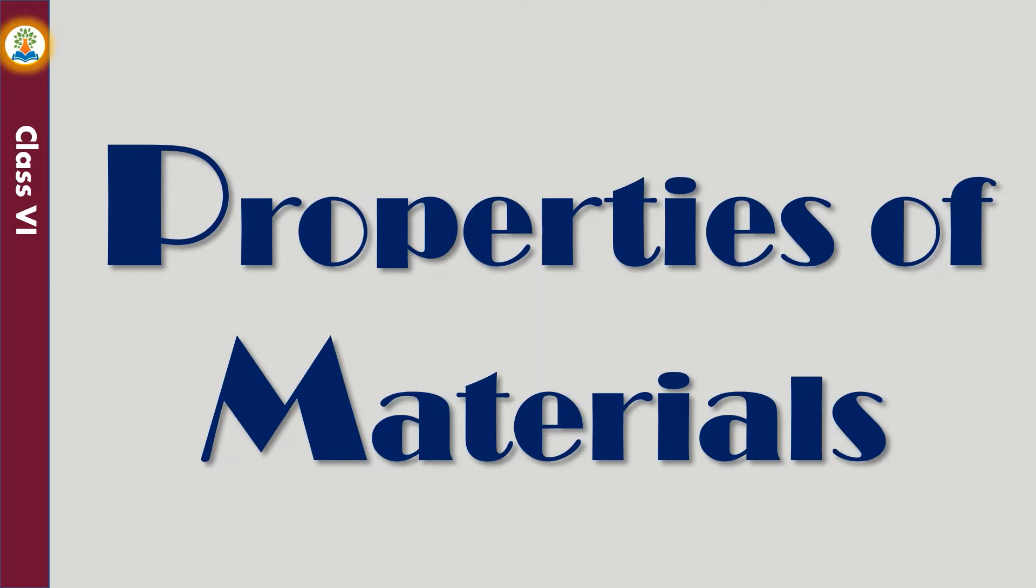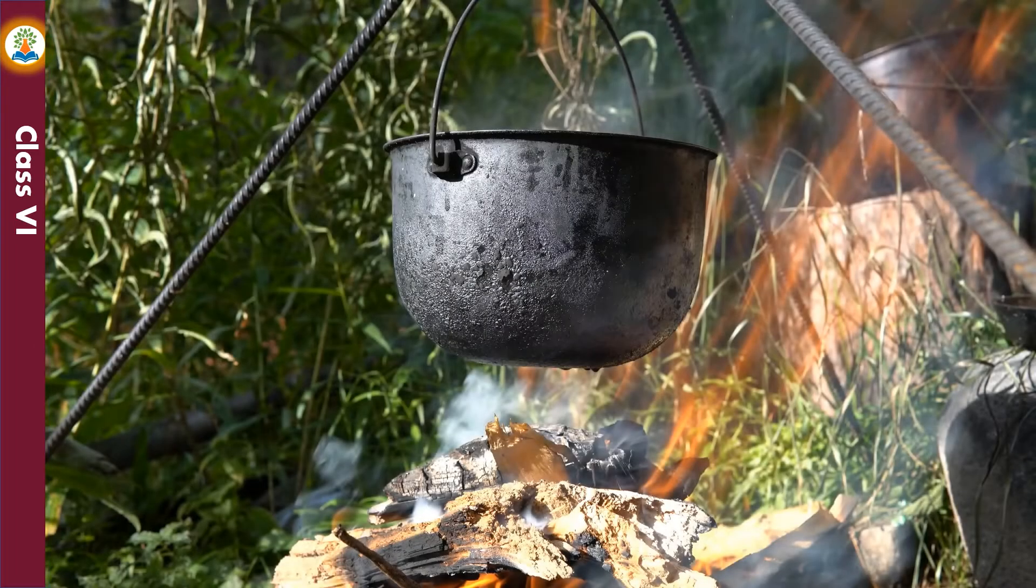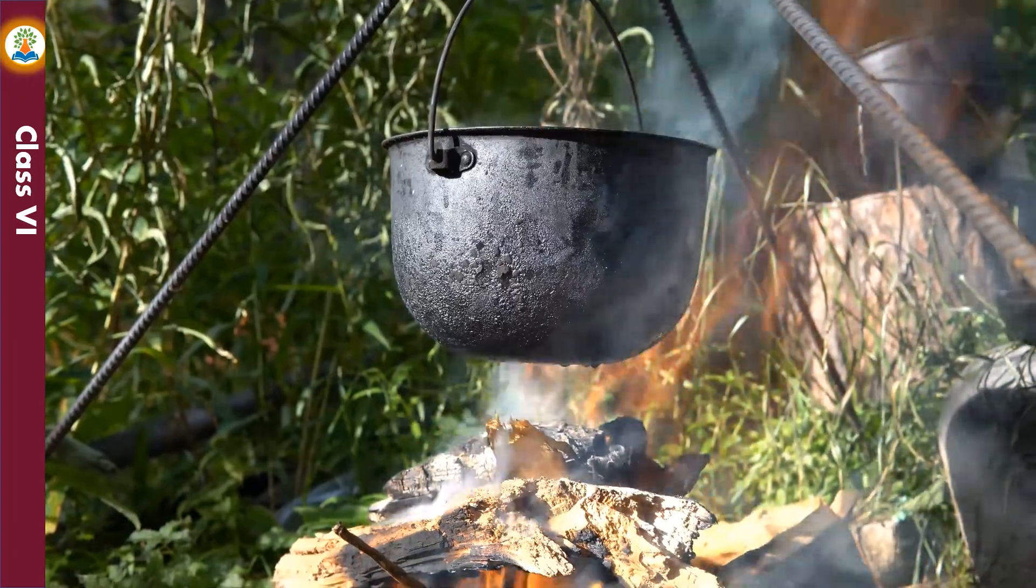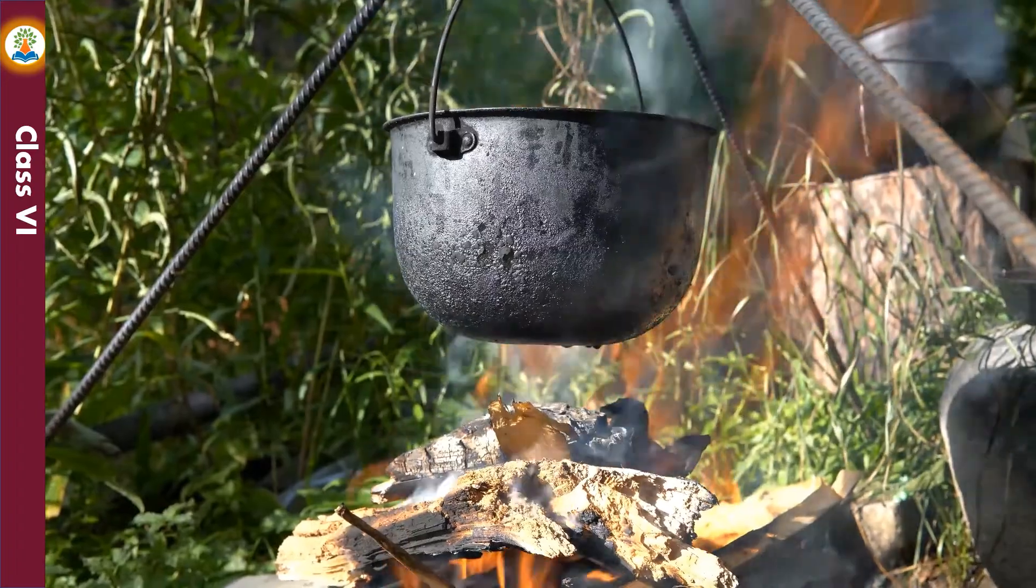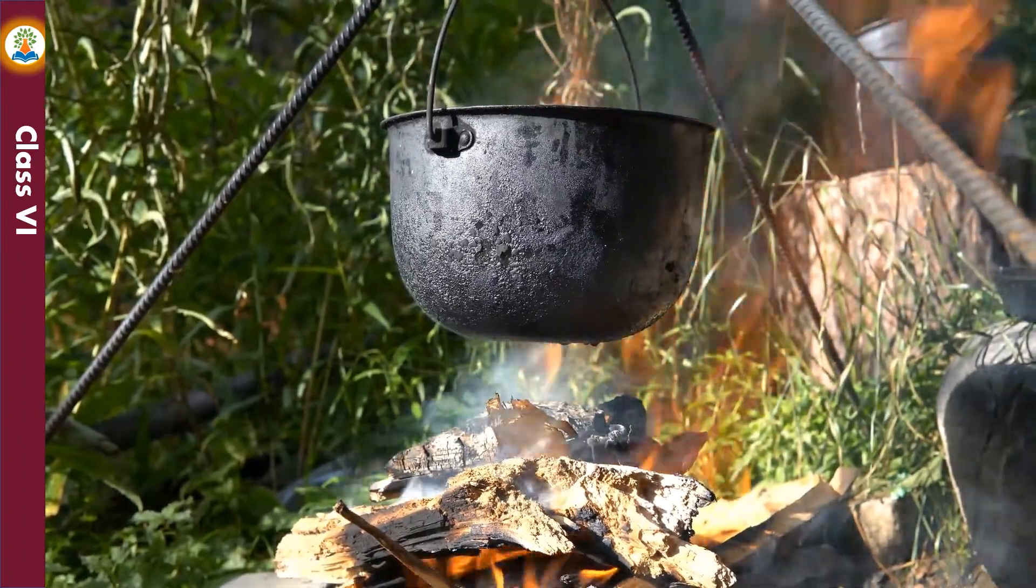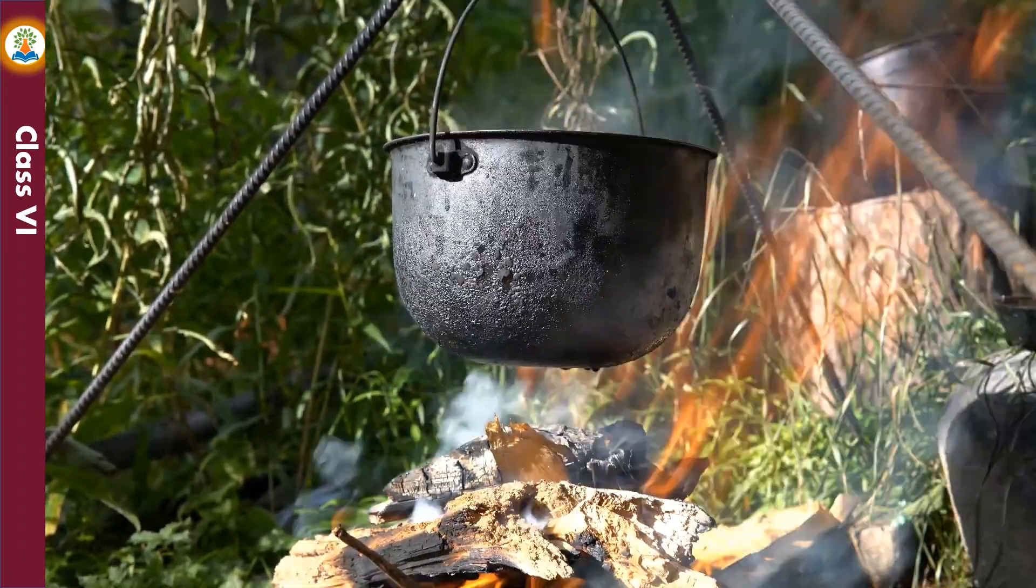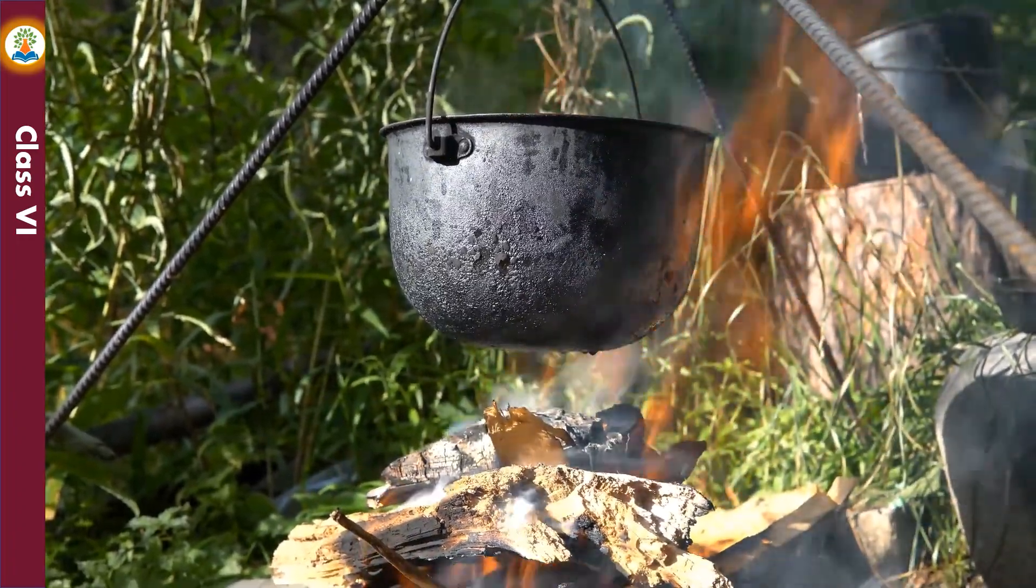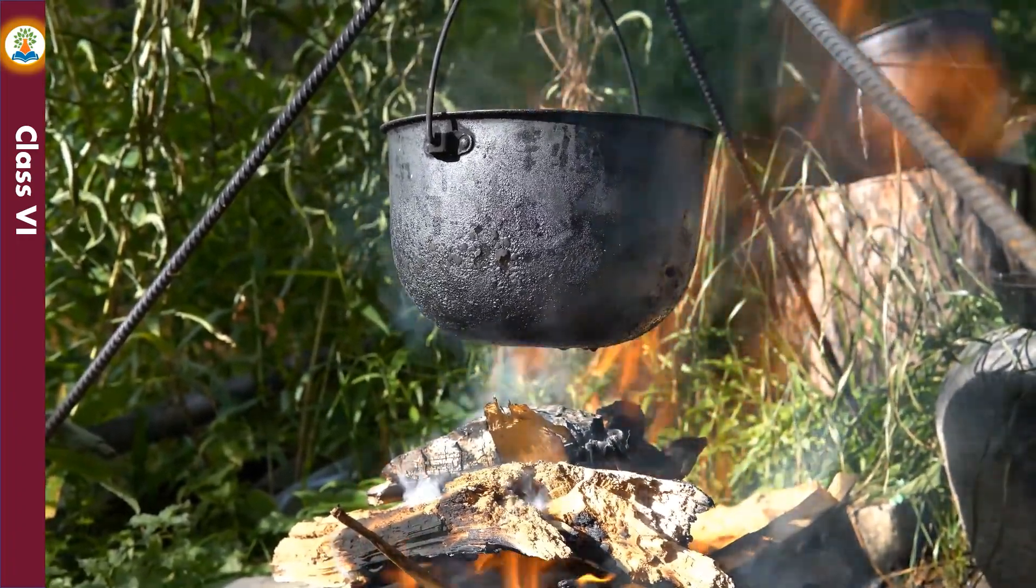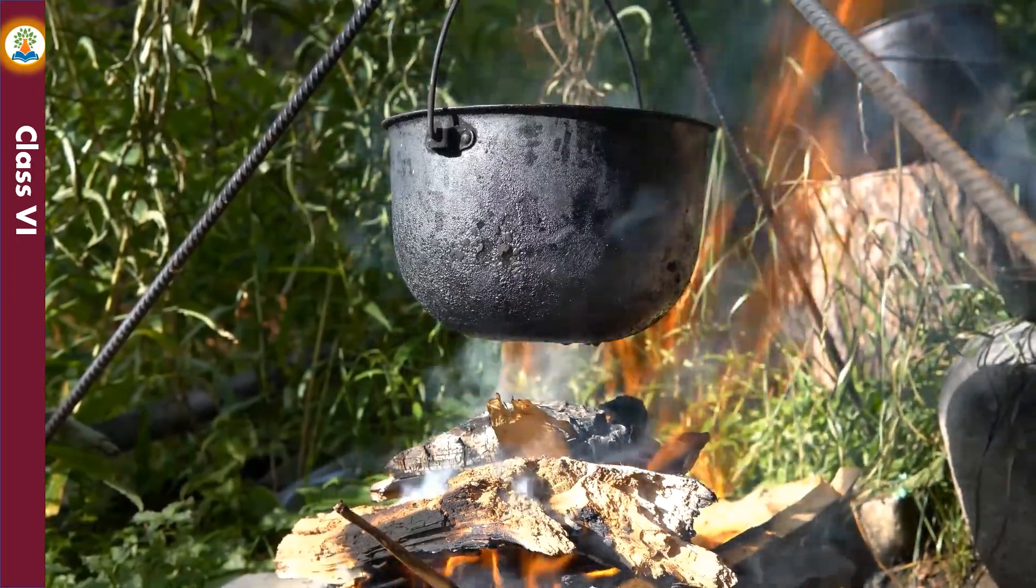Properties of materials. Have you ever wondered why a cooking utensil is made of a metal and not paper? Here we have two primary requirements: first, the cooking vessel should not catch fire itself. Second, it should provide sufficient heat to the food for cooking. Thus different properties of materials make them suitable for different uses.